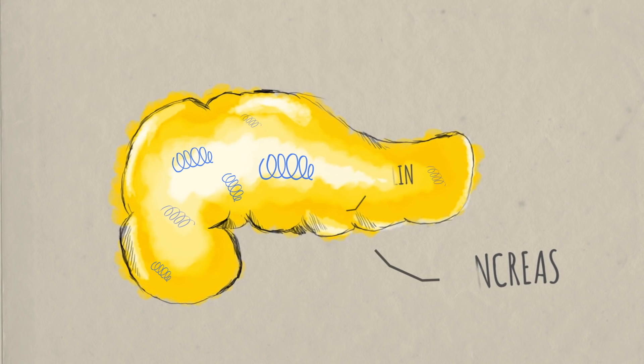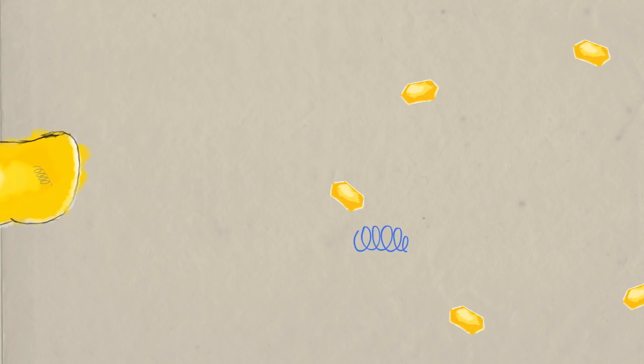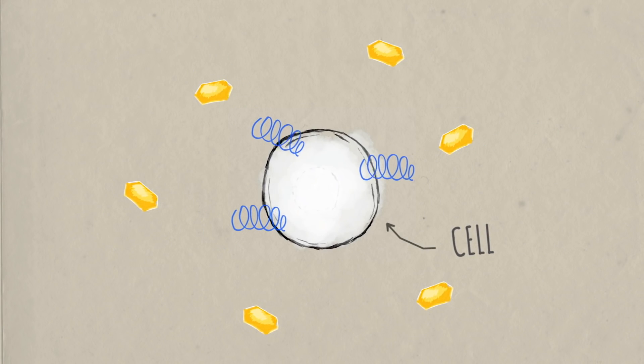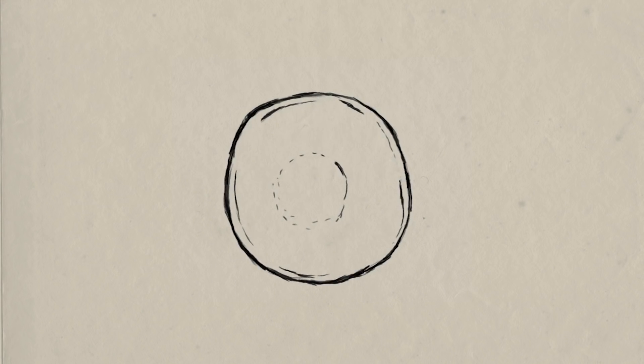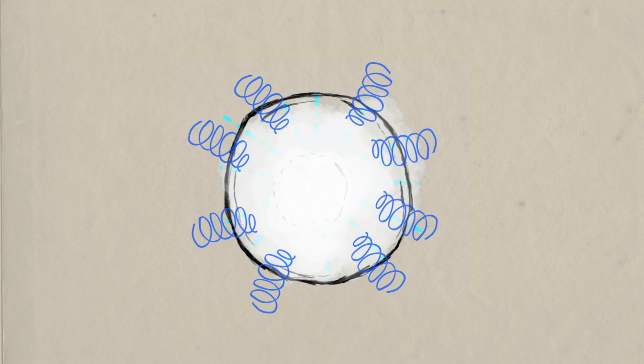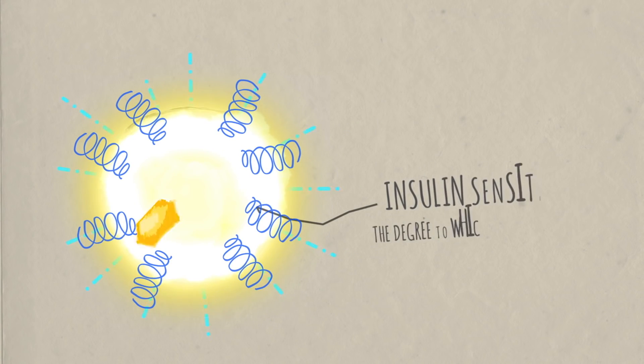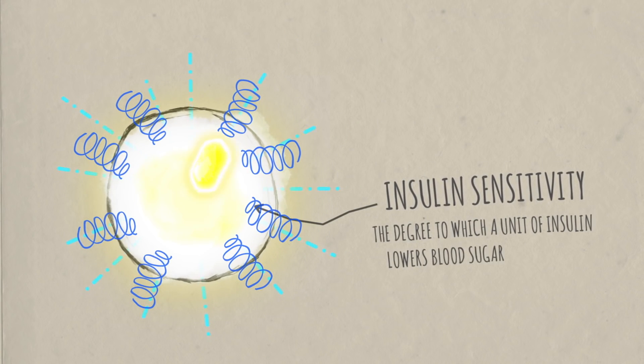When you eat and your blood sugar rises, insulin is secreted into the blood. It prompts your muscle and fat cells to let glucose in and jumpstarts the conversion of sugar to energy. The degree to which a unit of insulin lowers the blood sugar helps us understand something called insulin sensitivity. The more a given unit of insulin lowers blood sugar, the more sensitive you are to insulin.